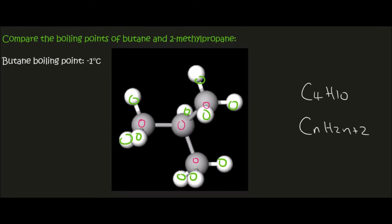It wouldn't be fair to compare butane with heptane, which has seven carbons — heptane would definitely have the higher boiling point because it has a longer chain and more surface area for London forces. But now we have something interesting: we're comparing two molecules that both have C4H10, and we're going to find that their boiling points are completely different. I'm going to explain why.